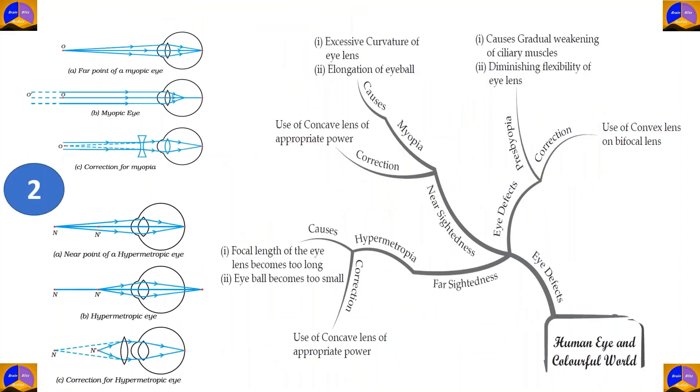Now, in this case, we'll be looking at defects due to refraction, which causes problems such as nearsightedness and farsightedness. Nearsightedness or myopia is caused by the excessive curvature of eye lens or the elongation of the eyeball. Essentially, the far point of the human eye's lens, which usually is infinity, has now been reduced.